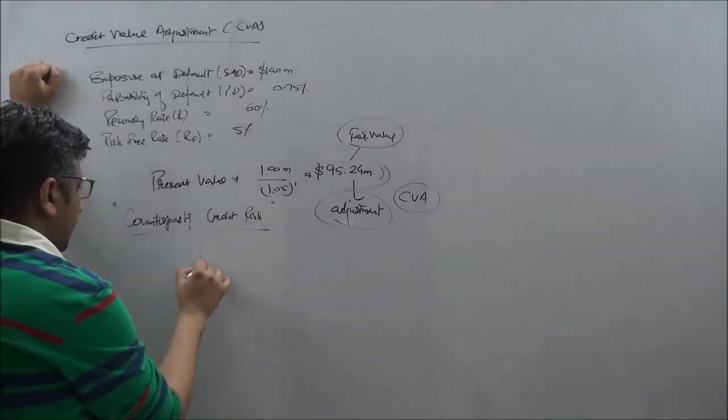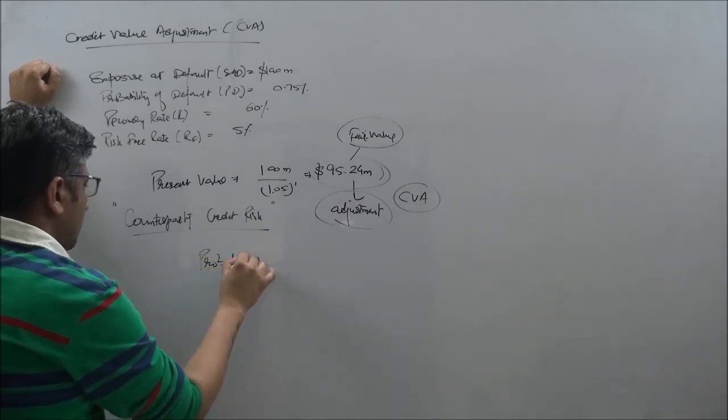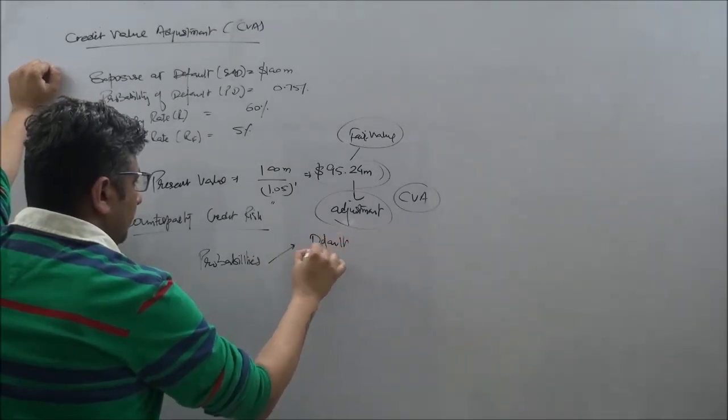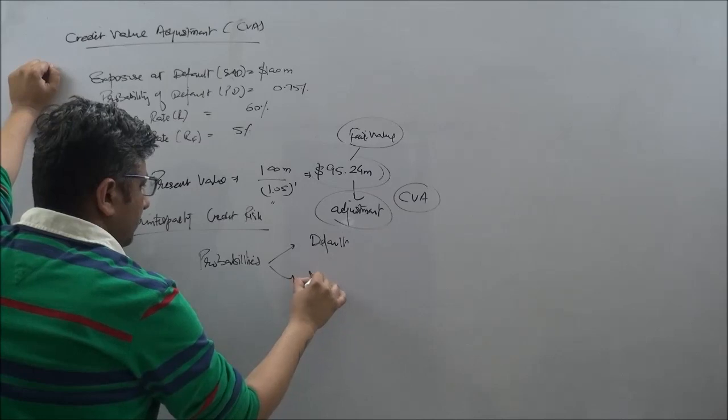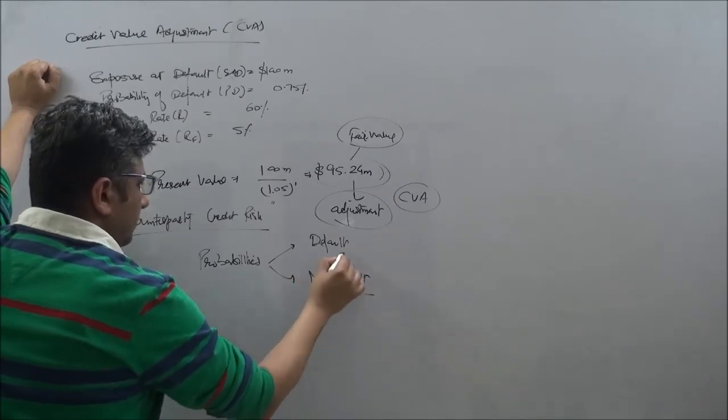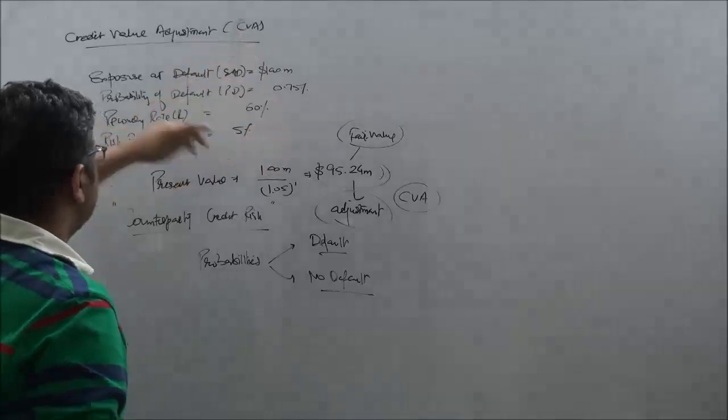We simply assign the probabilities that there could be a default and there is of course, there may not be a default, purely a binomial theory here. Now, we are of course given here, for example, the numbers are.